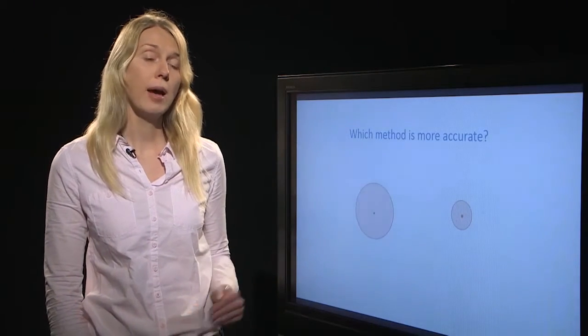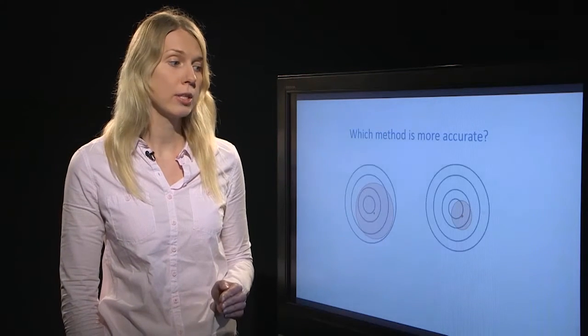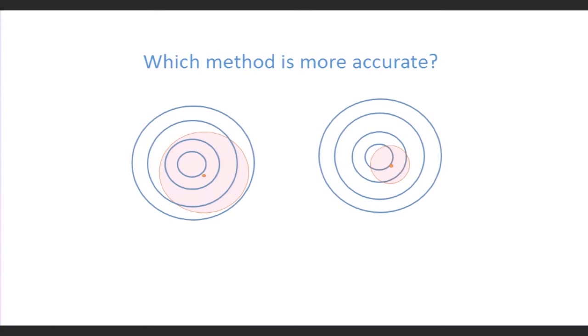But if we have two methods with different uncertainty limits, but both uncertainty limits including also the true value, then we can say that the method that has a narrower uncertainty limit is also more accurate.